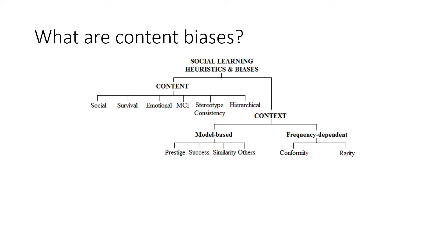But what are content biases? In the field of social learning and cultural evolution, we consider a number of heuristics and biases which influence the transmission of information. Context biases refer to our disposition to learn certain types of information or copy certain behaviours based on the context in which they are presented to us. So it might be model based, in that we might be more likely to learn information from or copy prestigious or successful individuals. Or they might be frequency dependent, so we might be more likely to copy behaviour that we see commonly through conformity.